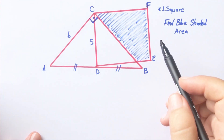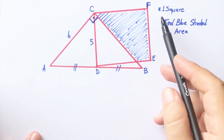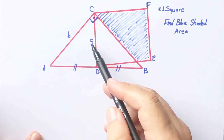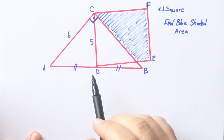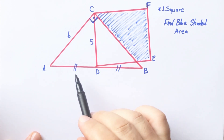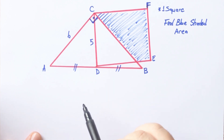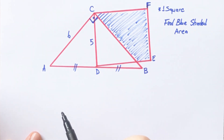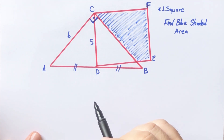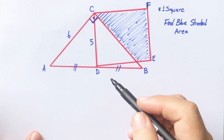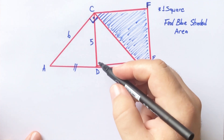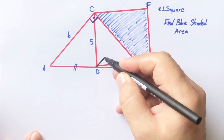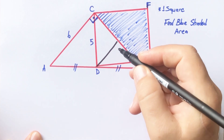In this video we have one square, here is 6, here is 5, and these two lengths are equal. The blue shaded area is what we need to find. First step: let's draw a perpendicular line parallel to AC.